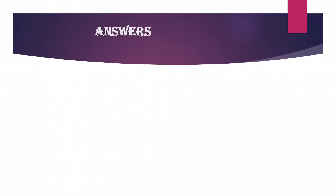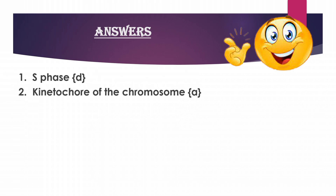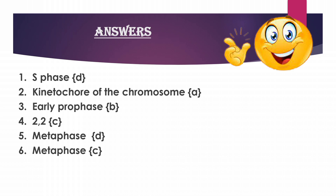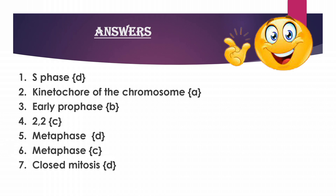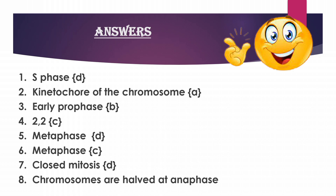Answers: Question 1 answer is S phase. Question 2 answer is kinetochore of chromosome — option A. Question 3 answer is early prophase — option B. Question 4 answer is 2-2 — option C. Question 5 answer is metaphase — option D. Question 6 answer is metaphase — option C. Question 7 answer is closed mitosis — option D. Question 8 answer is chromosomes are halved at anaphase.